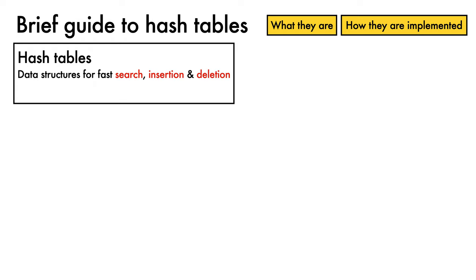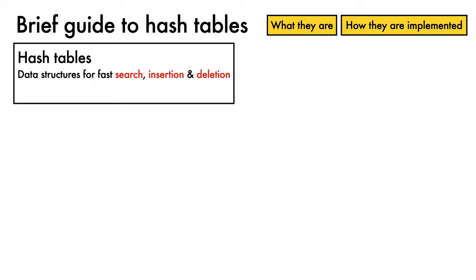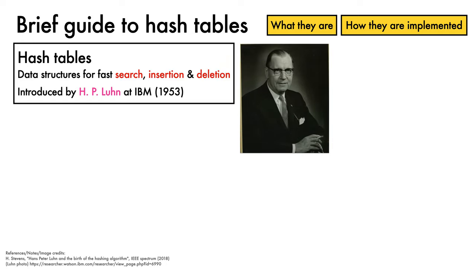As with many ideas, it's hard to be definitive about the original source of hash tables, but Hans-Peter Luhn, also well known for his work on summarization, is thought to have been the first to introduce the concept in a memo he wrote at IBM in 1953.